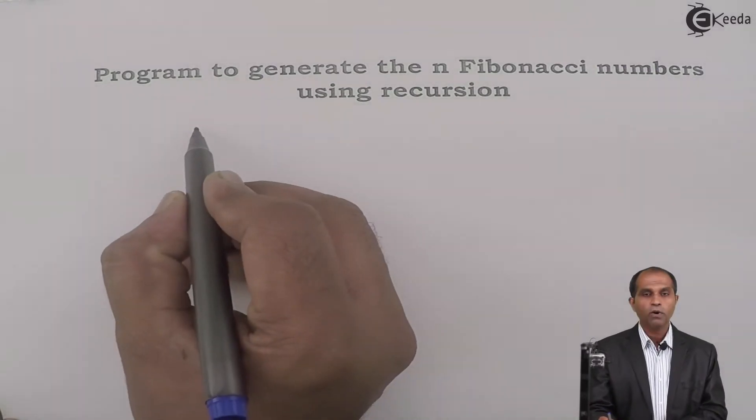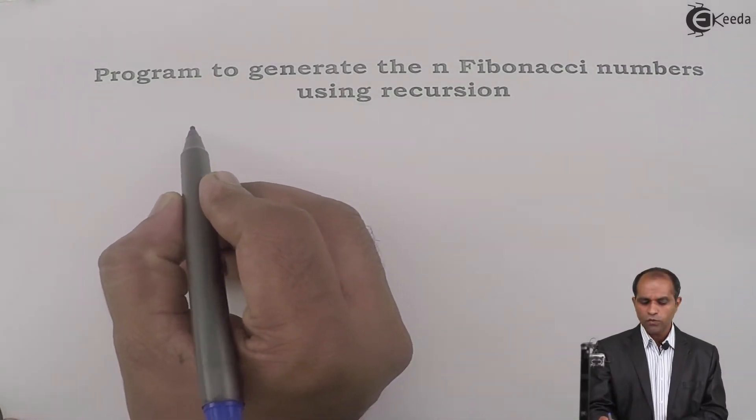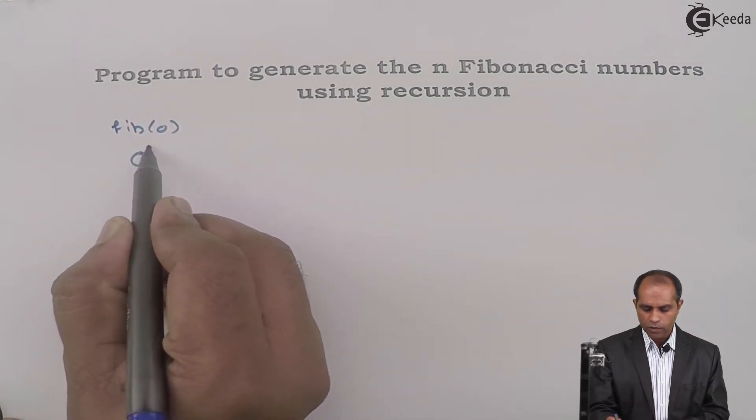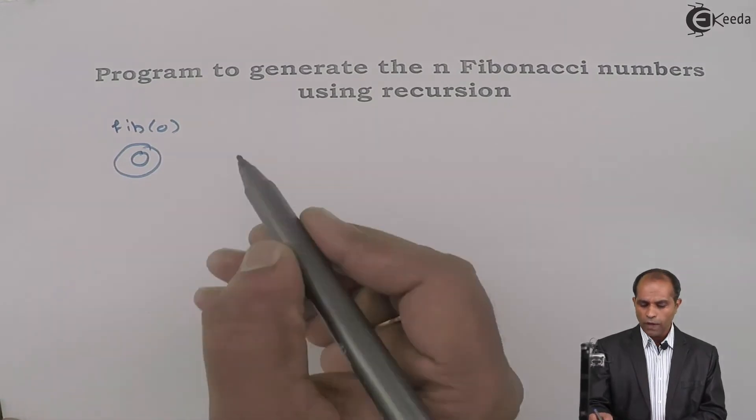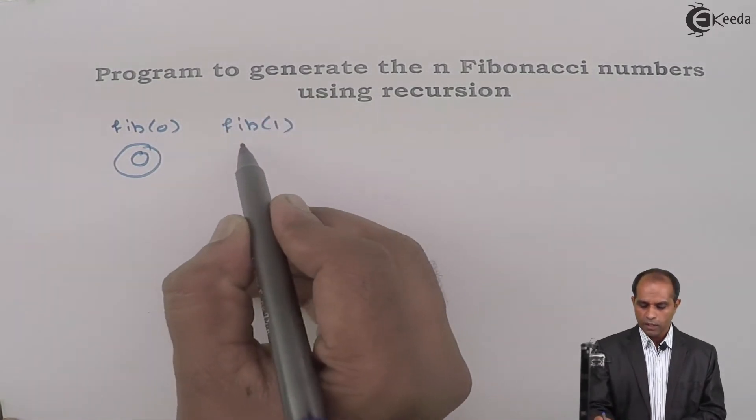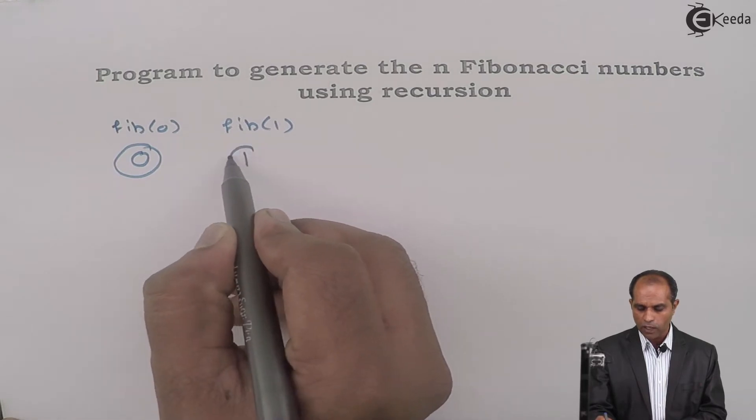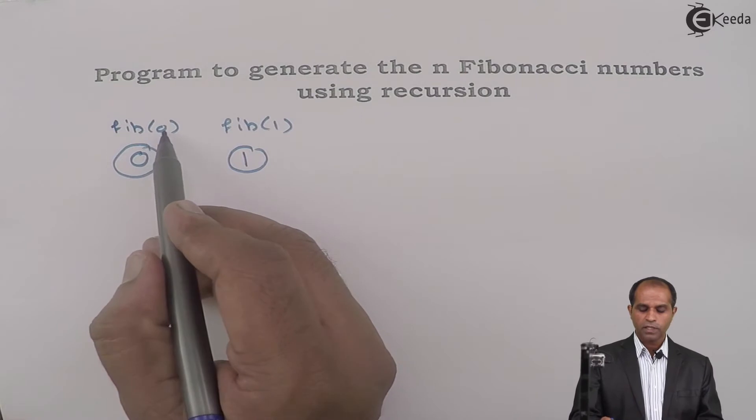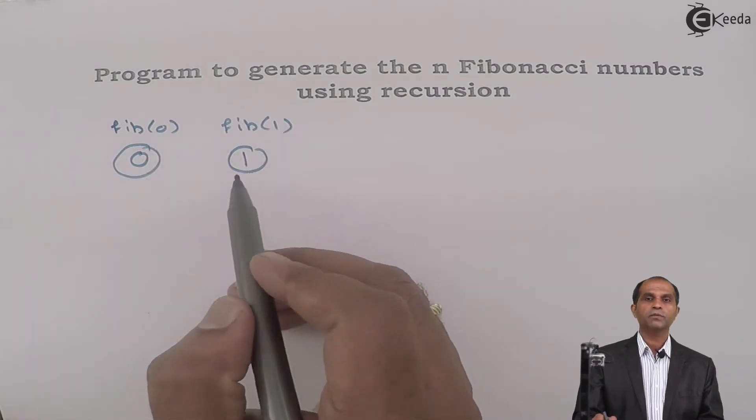What is Fib of 0? If I ask you to find Fibonacci of 0, the answer is 0. If I ask you to find the first Fibonacci number, Fib of 1, then Fib of 1 is 1. You know the first Fibonacci number is 0 and the second Fibonacci number is 1.